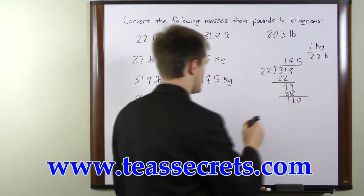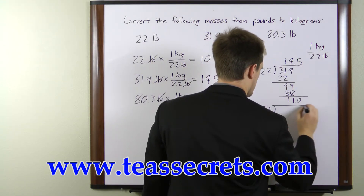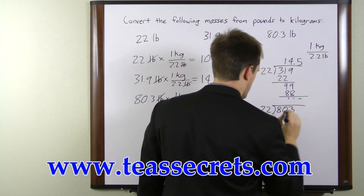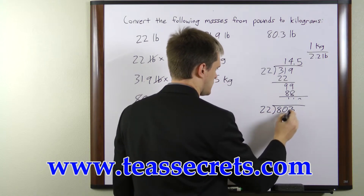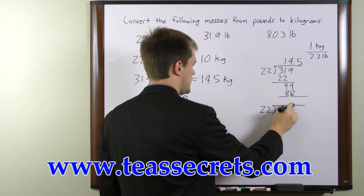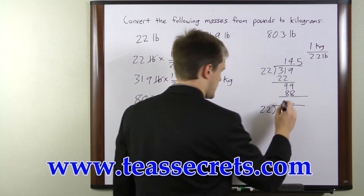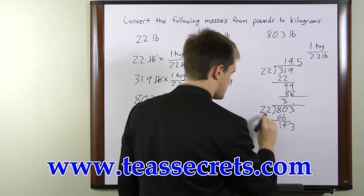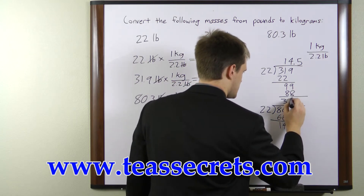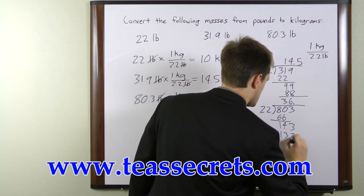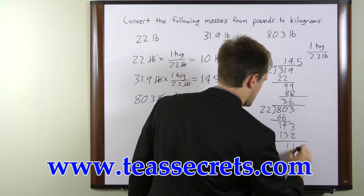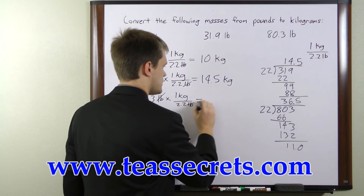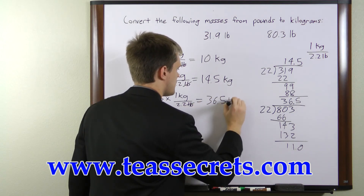So once again we're going to have to do long division here. We'll divide 2.2 into 80.3 — moving the decimal point over to the right one place, so we don't have to move our answer decimal place. 22 goes into 80 three times, and that leaves us with 14. 22 goes into 143 six times, for a total of 132. That leaves us with 11, and 22 goes into 110 five times. So our total here is going to be 36.5 kilograms.